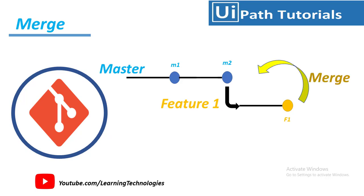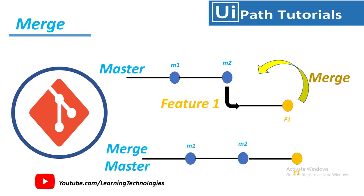Using the merge option, he will merge into the master branch. The merged master branch will then have M1 and M2 along with the F1 feature. Similarly, if multiple team members are working, they can all merge their changes into the master branch and continue creating more branches for future development.